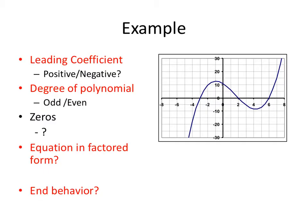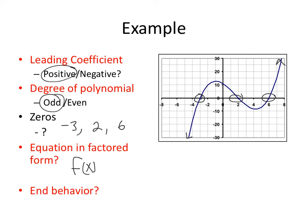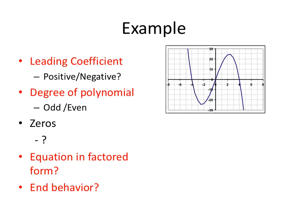Now let's look at an example from a graph. The leading coefficient is positive. The graph points in different directions so the degree is odd. The zeros — the x-intercepts — are negative 3, 2, and 6. The equation in factored form would be: x plus 3, times x minus 2, times x minus 6. The end behavior follows from the odd degree and positive leading coefficient.